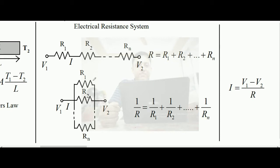Similarly, if resistances r1, r2, up to rn are connected in parallel — all with the same potential difference — then 1/R_effective = 1/r1 + 1/r2 + ... + 1/rn, where the reciprocals are added to get the reciprocal of the effective resistance. The current flowing through the system is again v1 − v2 upon the overall electrical resistance.